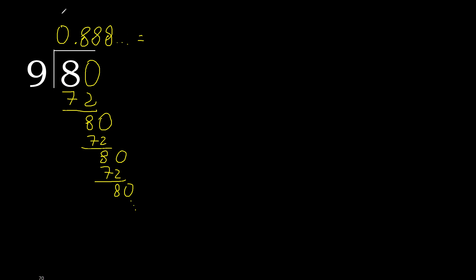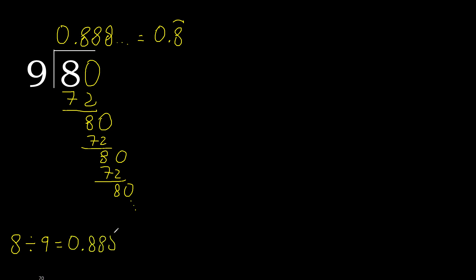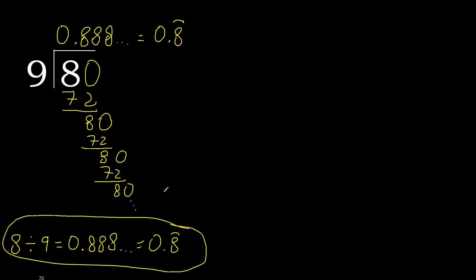After the decimal point, 8 repeats. Therefore, 8 divided by 9 is equal to 0.8 repeating.